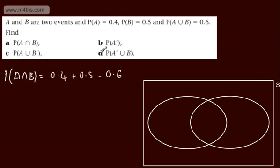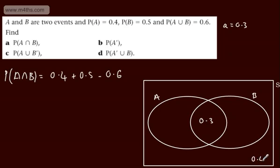On the Venn diagram, we place A and B with the intersection equal to 0.3. We know P(A union B) is 0.6, so the outside region must be 0.4. Since P(A) is 0.4 and we already have 0.3 in the intersection, the A-only region is 0.1. Since P(B) is 0.5, the B-only region is 0.2.